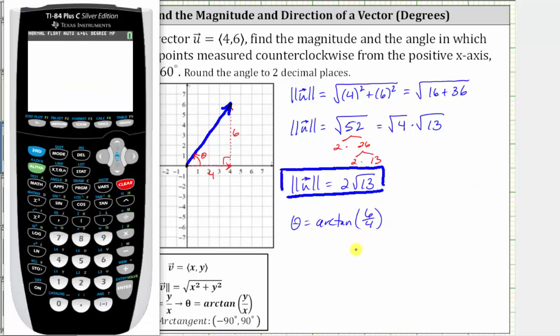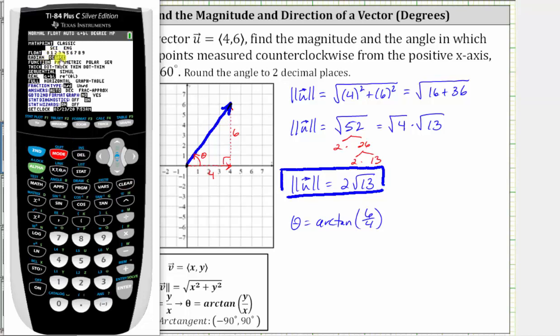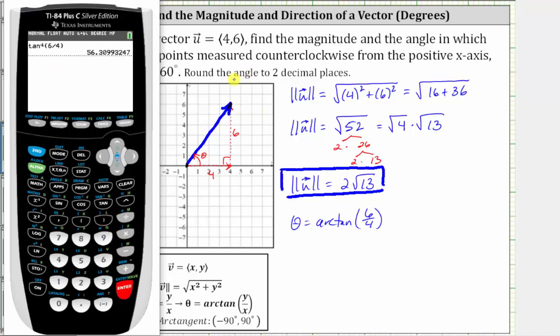Going to the calculator, it's important to make sure we're in degree mode by pressing the mode key. We go back to the home screen and press second tangent for arctangent, 6 divided by 4, close parenthesis and enter. We're told to round to two decimal places, and we get 56.31 degrees.